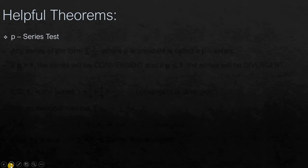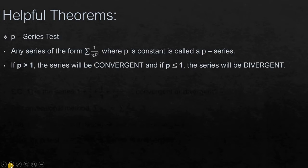First one of these is the p-series test. Any series of the form sigma 1 over n to the power p where p is a constant is called a p-series. Simplest example of a p-series is sigma 1 over n square where p is 2, and the sigma of 1 over n square will be 1 plus 1 by 4 plus 1 by 9 plus 1 by 16 and so on.